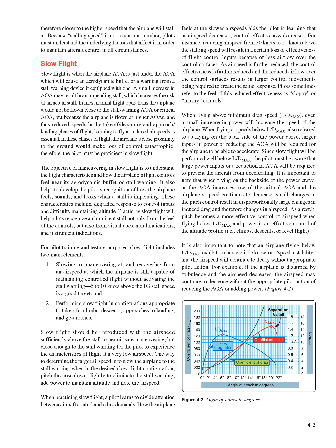One way to determine the target airspeed is to slow the airplane to the stall warning in the desired slow flight configuration, pitch the nose down slightly to eliminate the stall warning, add power to maintain altitude, and note the airspeed. When practicing slow flight, a pilot learns to divide attention between aircraft control and other demands. As airspeed decreases, control effectiveness decreases — reducing airspeed from 30 knots to 20 knots above the stalling speed will result in a loss of effectiveness of flight control inputs because of less airflow over the control surfaces.